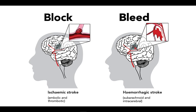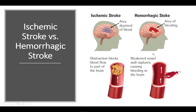A stroke is a disruption in blood flow to the brain or a bleeding on the brain. It is a life-threatening emergency that needs immediate attention. There are two primary types of stroke. Hemorrhagic stroke occurs when a weakened blood vessel ruptures, often due to an aneurysm or artery malformation. Ischemic stroke occurs as a result of an obstruction within a blood vessel that supplies blood to the brain, and is the most common type, accounting for 87% of all stroke cases.